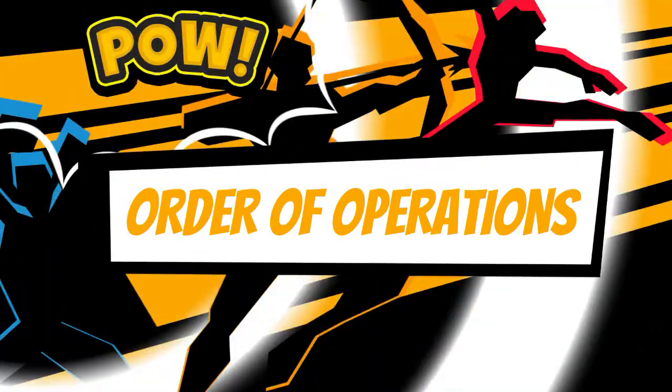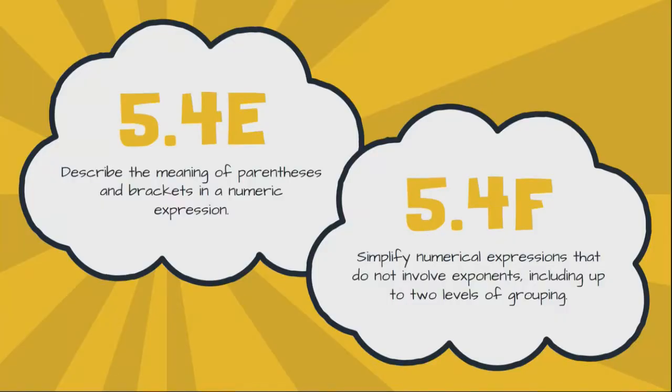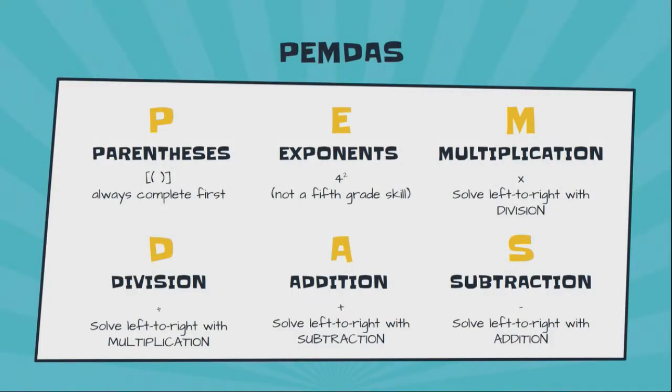All right, in this video we're going to talk about order of operations. These are the objectives. So we're going to start with PEMDAS, and you might see PEMDAS written in different ways. I've seen it written as GEMDAS with a G, I've seen it written with a B, BEMDAS. The only thing that changes is that first letter.